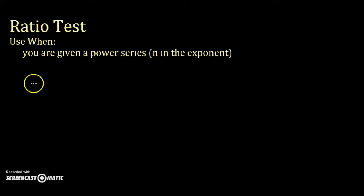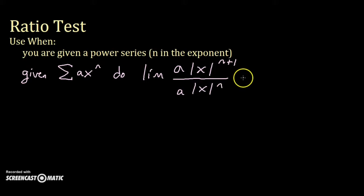To perform the ratio test, take the limit as n approaches infinity of the series, plugging in n plus 1 for n over the series with n as is. Make sure you take the absolute value of x as well. When the limit's absolute value is less than 1, which is between negative 1 and 1, then the series is convergent.